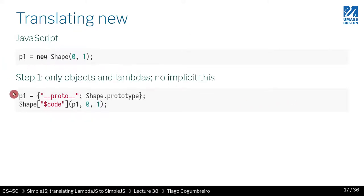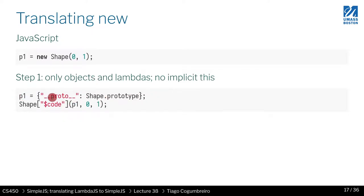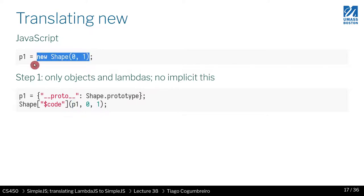For translating "new": you first create a new object and initialize the proto field to shape.prototype. Then you call the code and pass "this" explicitly — whereas in the original it was implicit. So we're making everything very explicit.